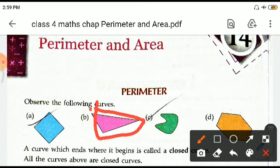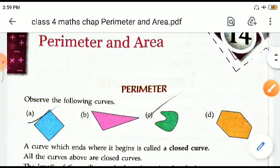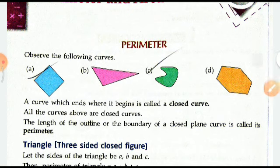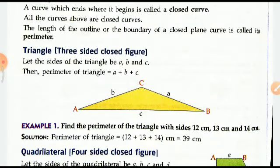And the sum of the sides, the length of the sides will be the perimeter. All the curves above are closed curves. The length of the outline or the boundary of a closed plane curve is called the perimeter.